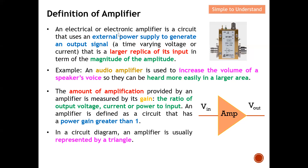In short, an amplifier uses an external power supply to amplify the signal from input to output. The output will look exactly the same as the input, except that the amplitude is amplified many times larger. All other characteristics like frequency remain intact — typically only the amplitude changes. This is a simple and easy definition of amplifier.